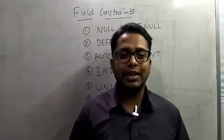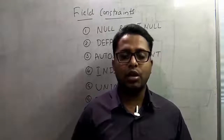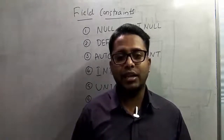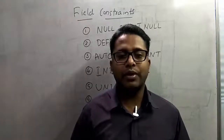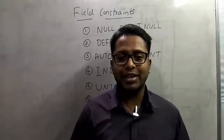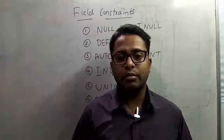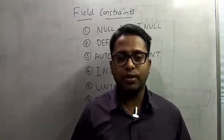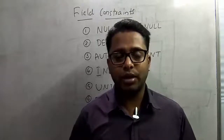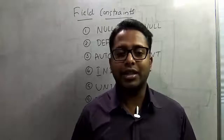Hi everyone, this is Mehmushik and welcome to MySQL tutorial series. In our last video we learned different date and time functions, and in this video we are going to discuss field constraints — also called modifiers — that are used for increasing the consistency of the data, so that correct and exact data is entered inside the tables of a database. We have different types of constraints: null and not null, primary keys, foreign keys, unique, auto increment, and default.